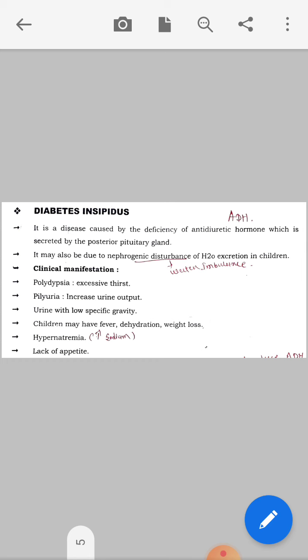Next is hypernatremia. Hyper means increase and natremia means sodium. So sodium level increases because urine specific gravity is high and urine output increases. Ultimately, sodium level increases. Lack of appetite, which leads to weight loss.